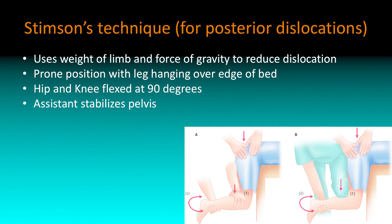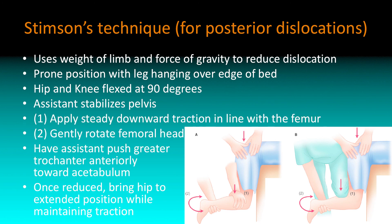Then there's the Stimson technique, which you probably remember the name from shoulder dislocations — same principle, using the weight of the leg itself and gravity to help. This one is a little harder to do in the ED because you're going to have your patient prone, you're already doing procedural sedation, and these patients have other injuries too. But if it's their only injury, it's an option. Patient is hanging off the bed, knee flexed, hip flexed, assistant stabilizing the pelvis. You push downwards in line with the femur, then rotate at the ankle, while your assistant pushes down on the greater trochanter.